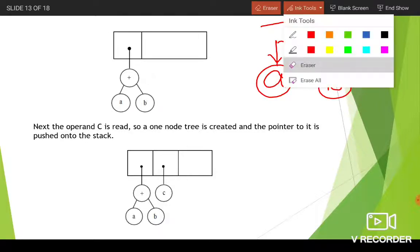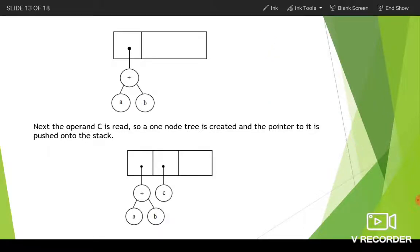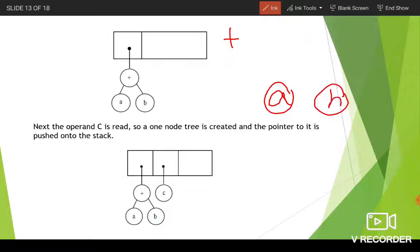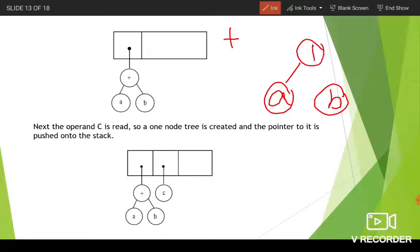To clarify the '+' step: the incoming operator is plus. We pop two pointers from the stack — the two pointers are 'a' and 'b'. We form a new tree with '+' as root, t2 as left child, and t1 as right child, then push its pointer back onto the stack.